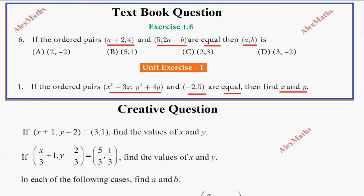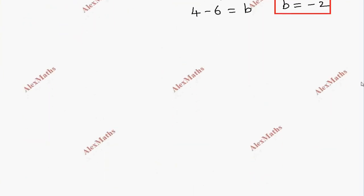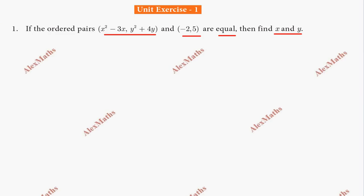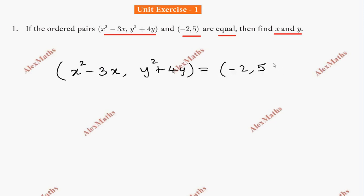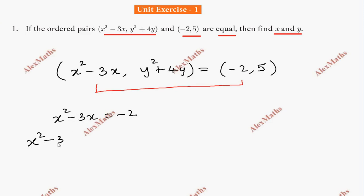Question number 1: the ordered pair (x²-3x, y²+4y) is equal to (-2, 5). We equate the first elements: x²-3x equals minus 2.